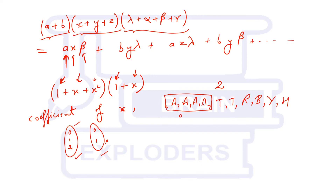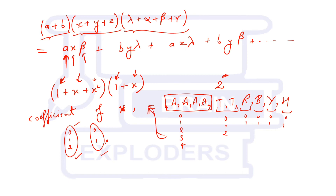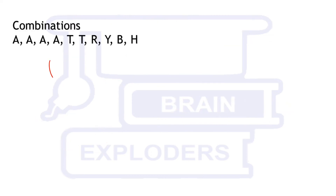We can convert the RAABHTT selection problem into a multinomial expansion. It was possible to select either 0, 1, 2, 3, or 4 A's from the first part; 0 or 1 times each of R, B, Y, H. We write this as a generating function, and finding the coefficient of x^4 tells us in how many ways we can select four letters.